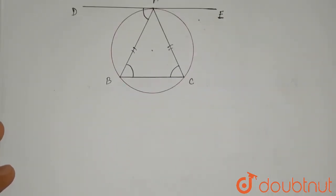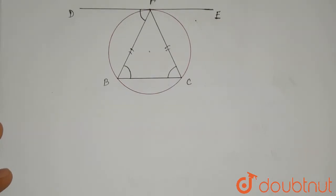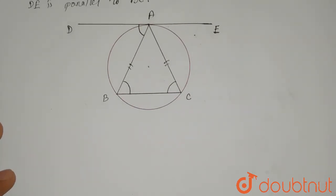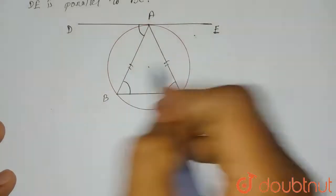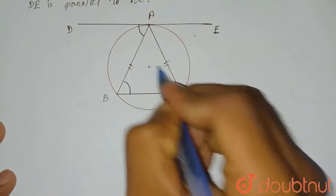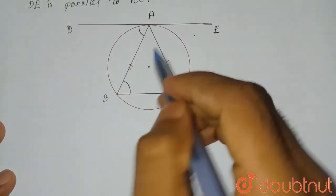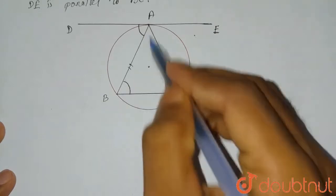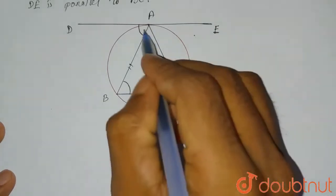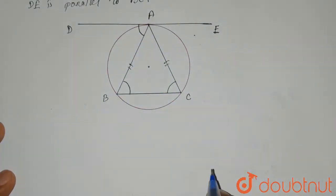So if you look at the diagram, we can see that this is a circle. DA is the tangent at point A, and AB and AC are equal sides of triangle ABC.